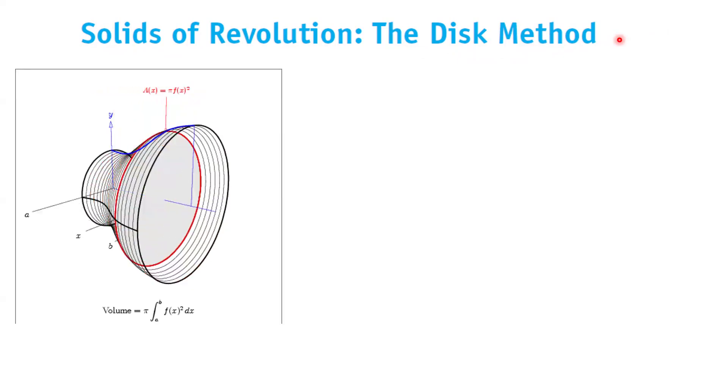For example, consider a function that is rotated about the x-axis, and it creates the following solid for you. In that case, the cross-section, the vertical cross-section as you can see, is a circle.